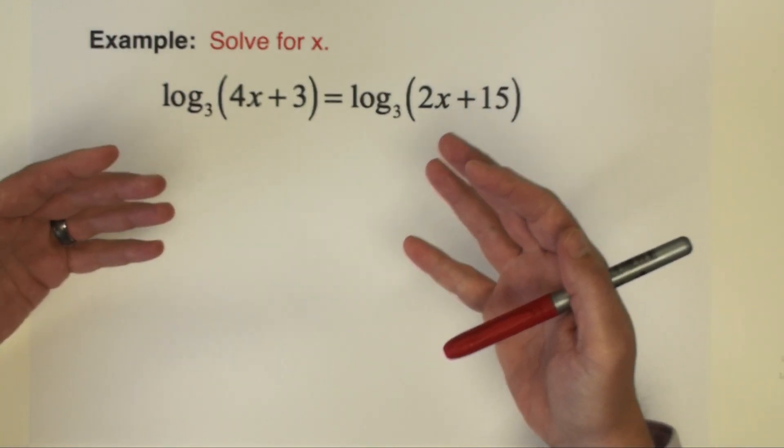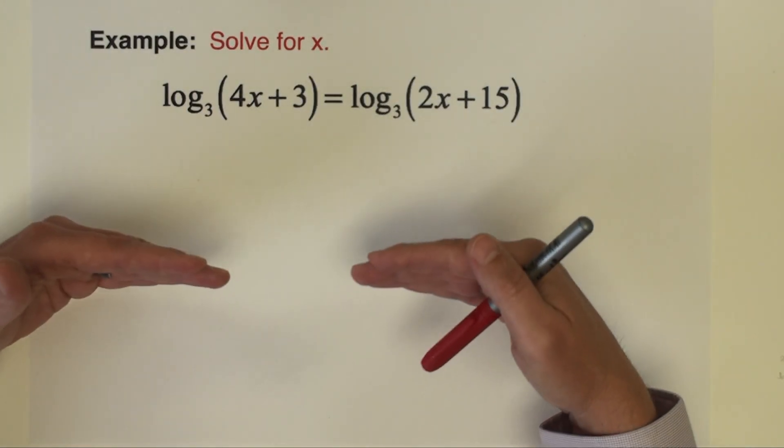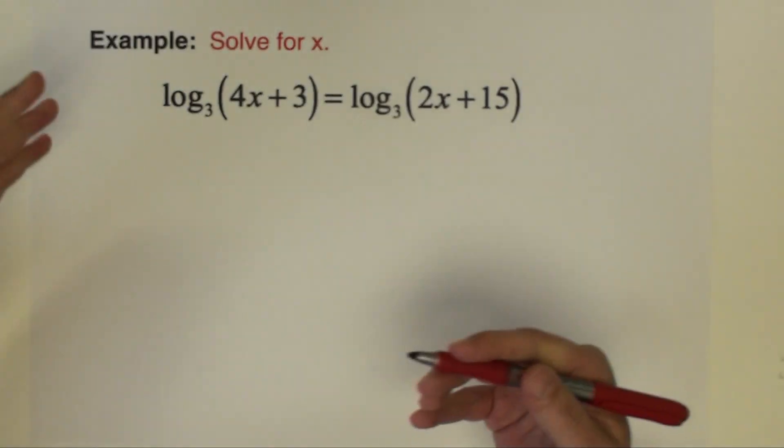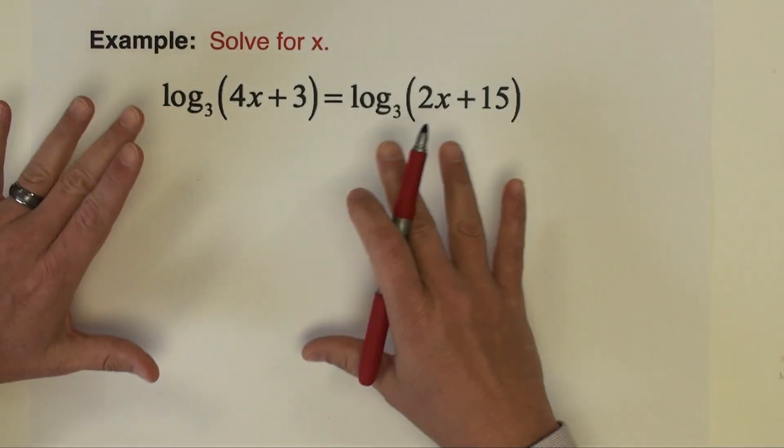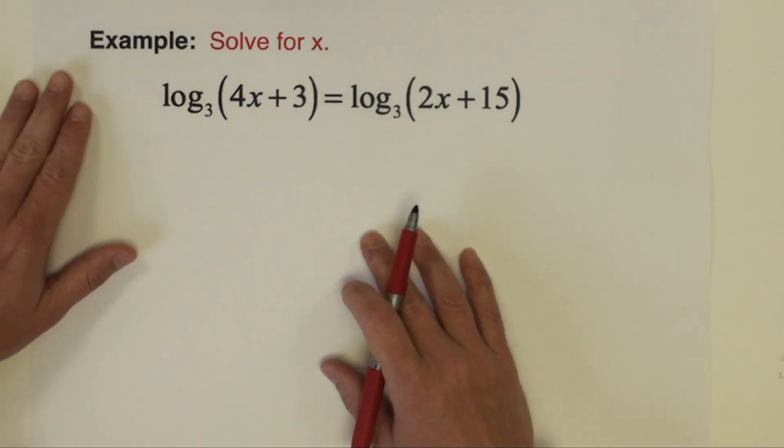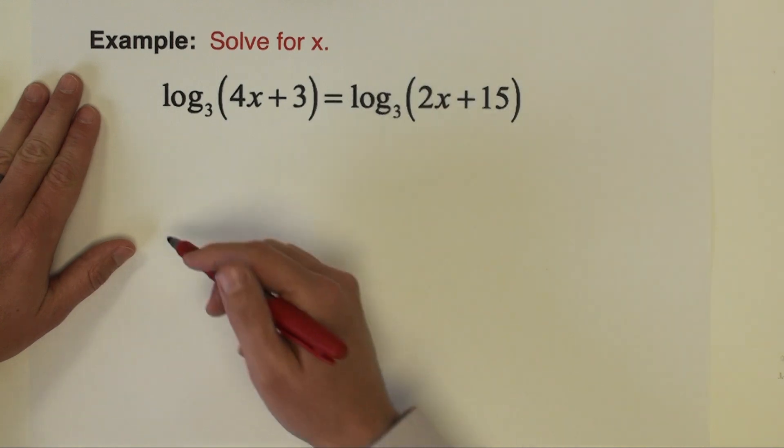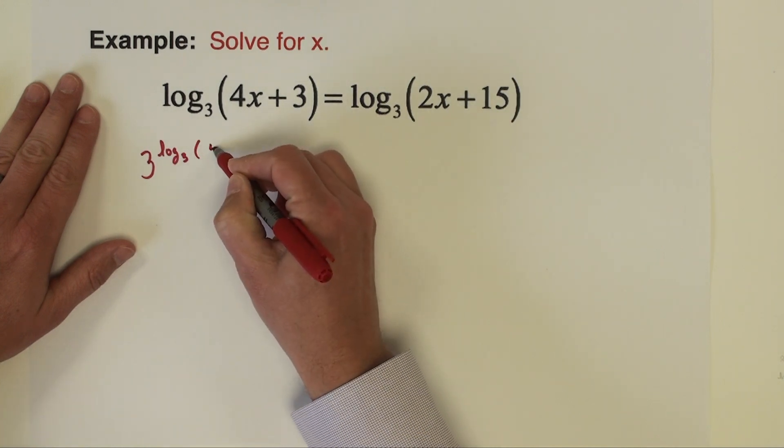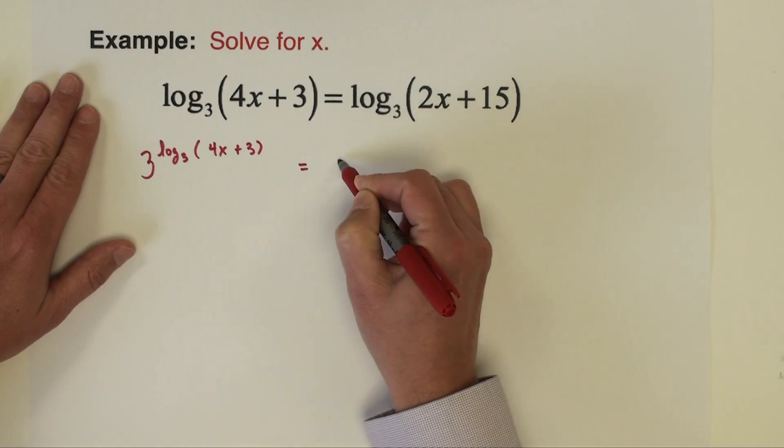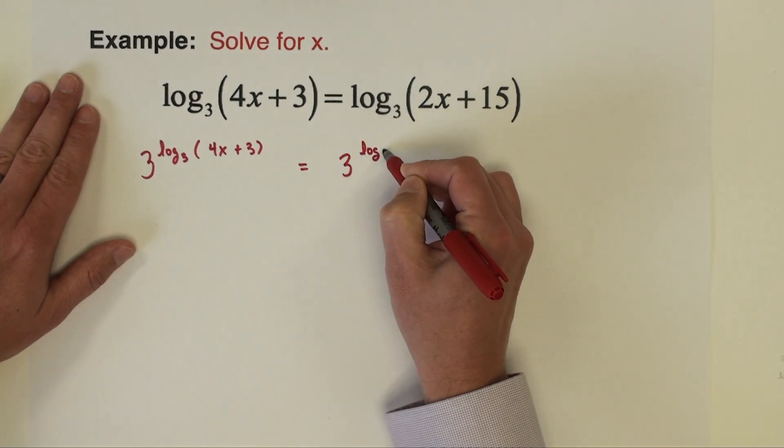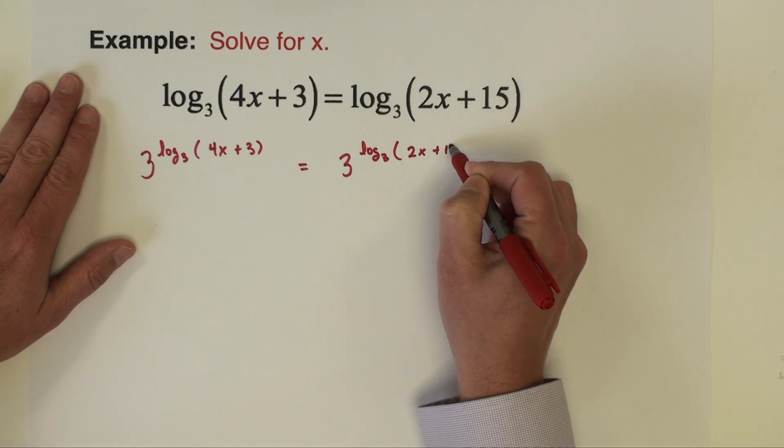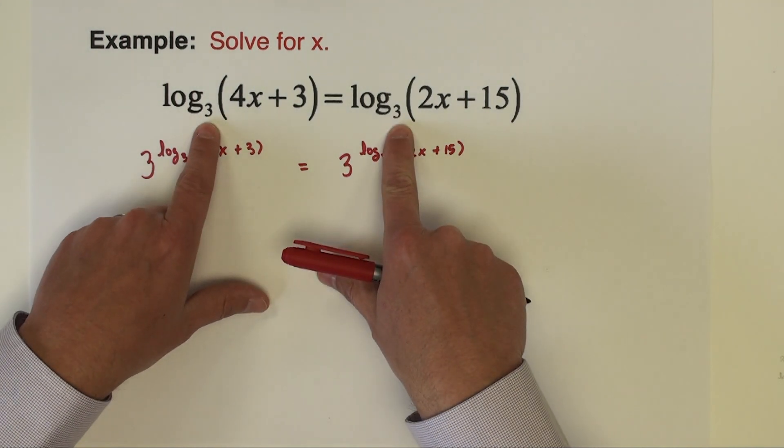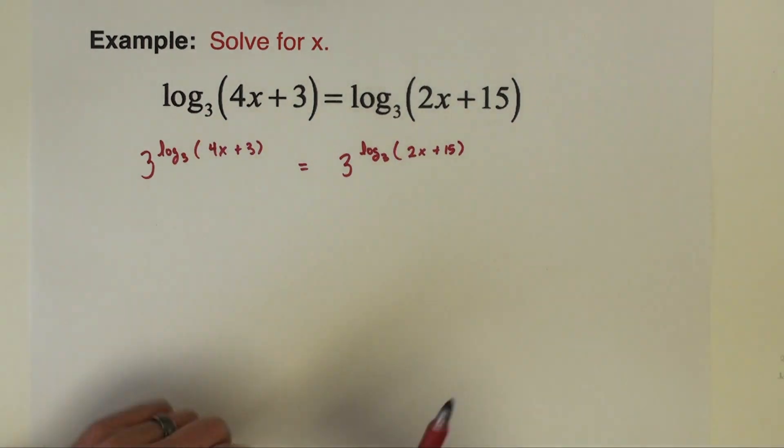What we did in the last video with logarithmic equations is we exponentiated both sides of the equation above a common base, and that's exactly what we're going to do here. I'm going to rewrite this as 3 raised to the log base 3 of 4x plus 3 equals 3 raised to the log base 3 of 2x plus 15. Notice I'm using base 3 because the base of the logarithms was also 3. When they match, they cancel out.